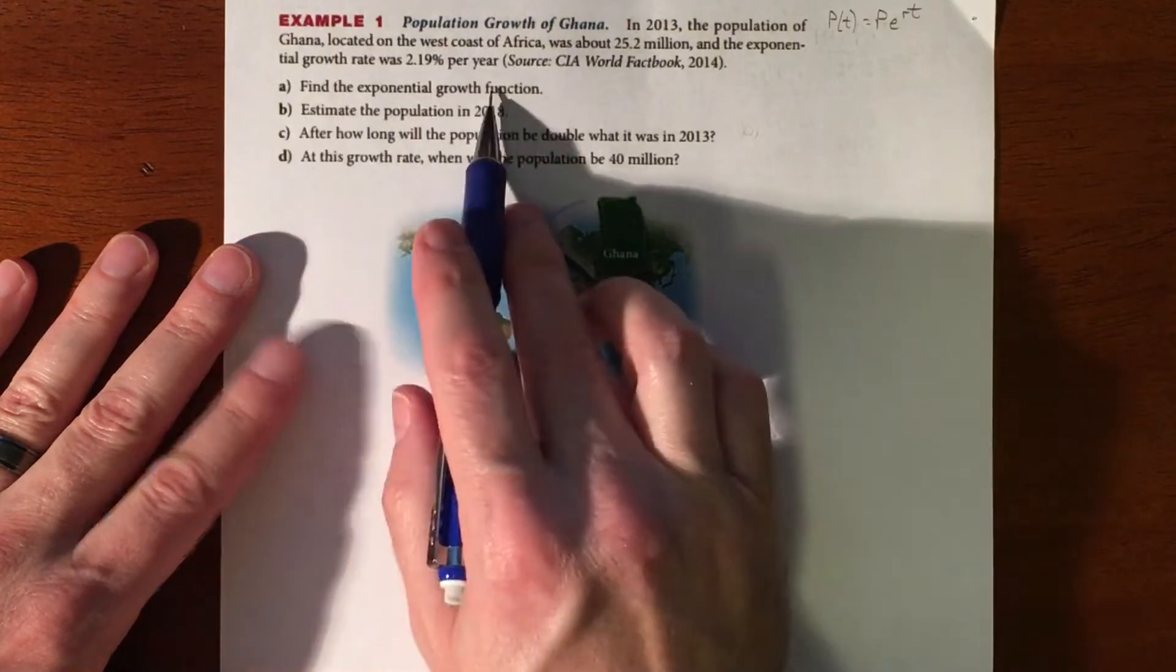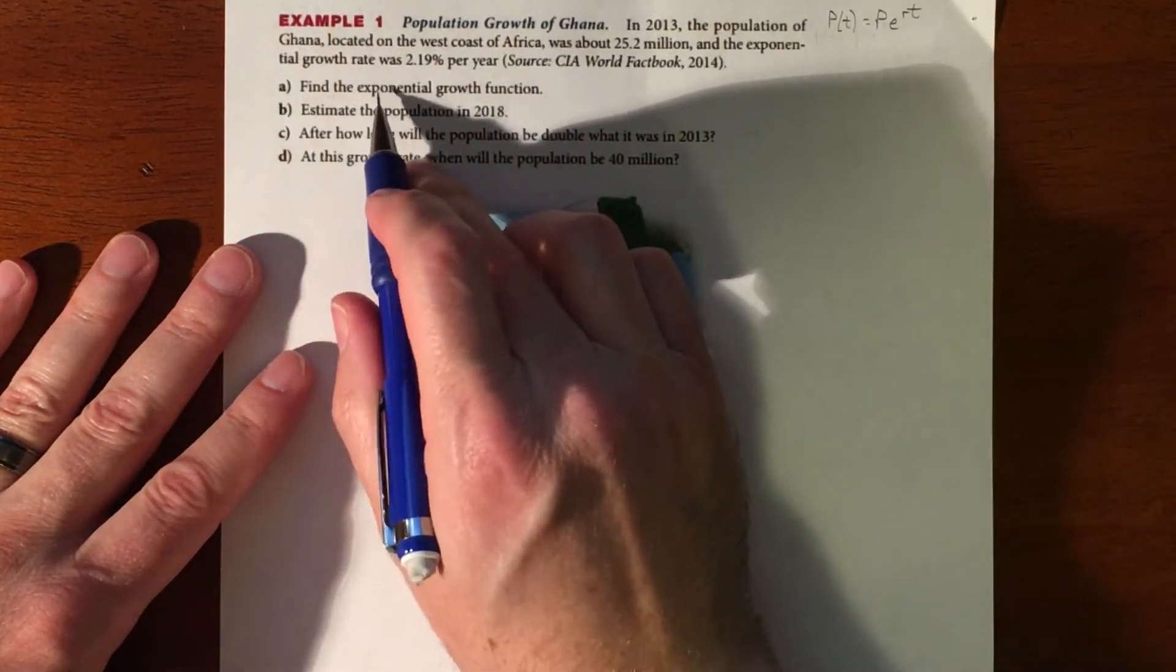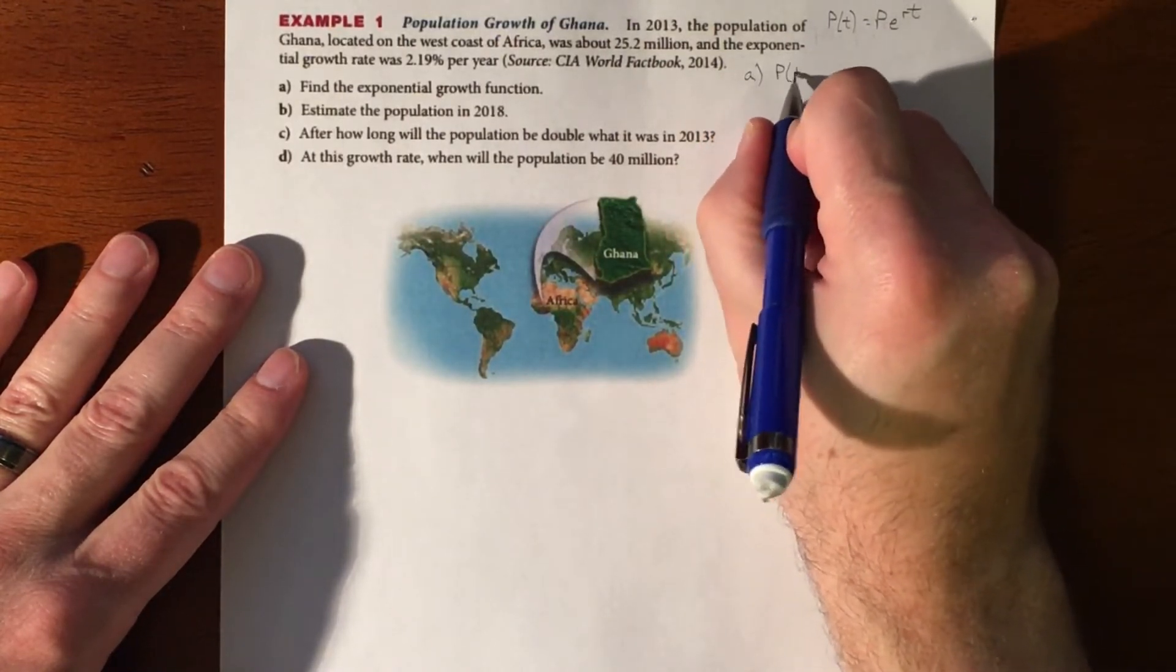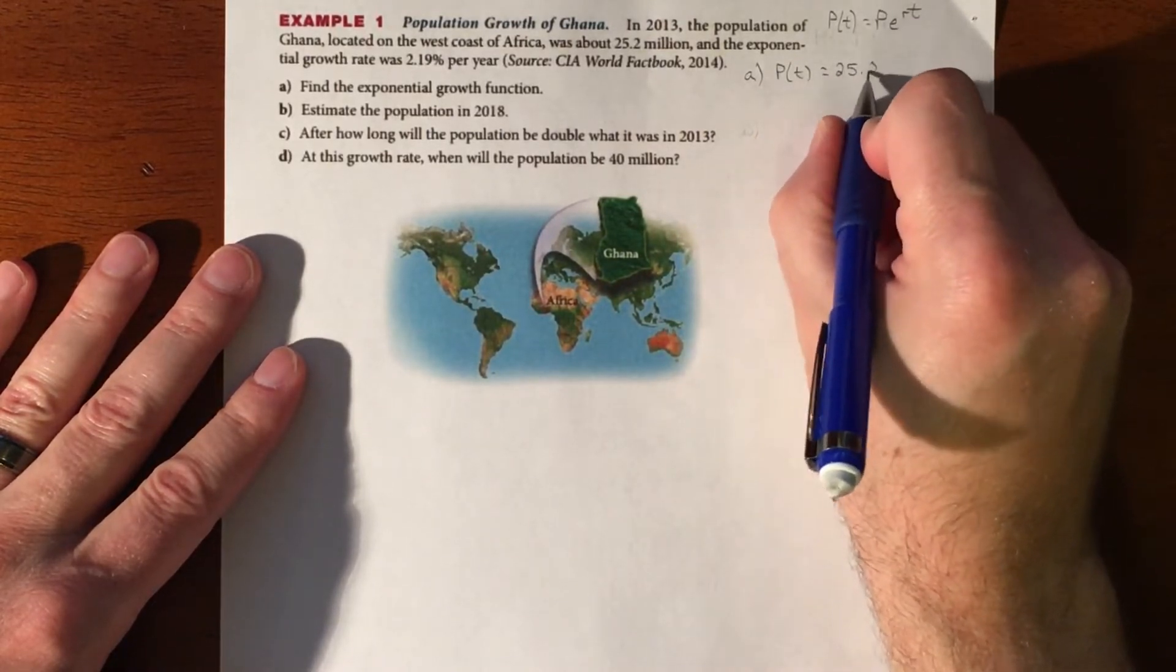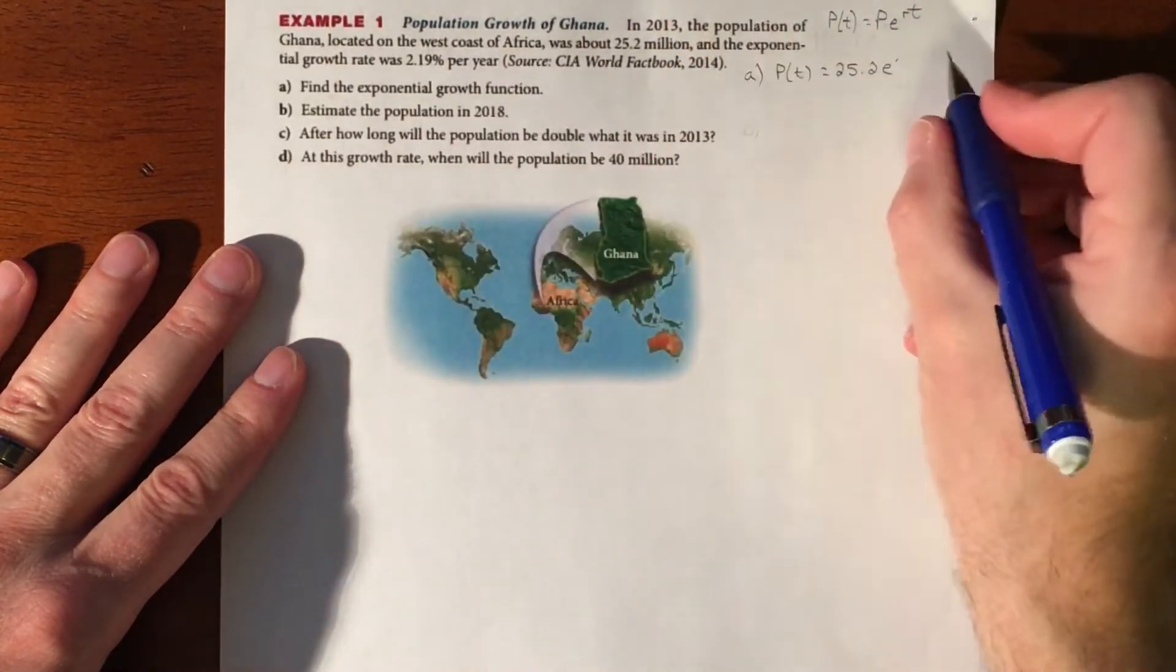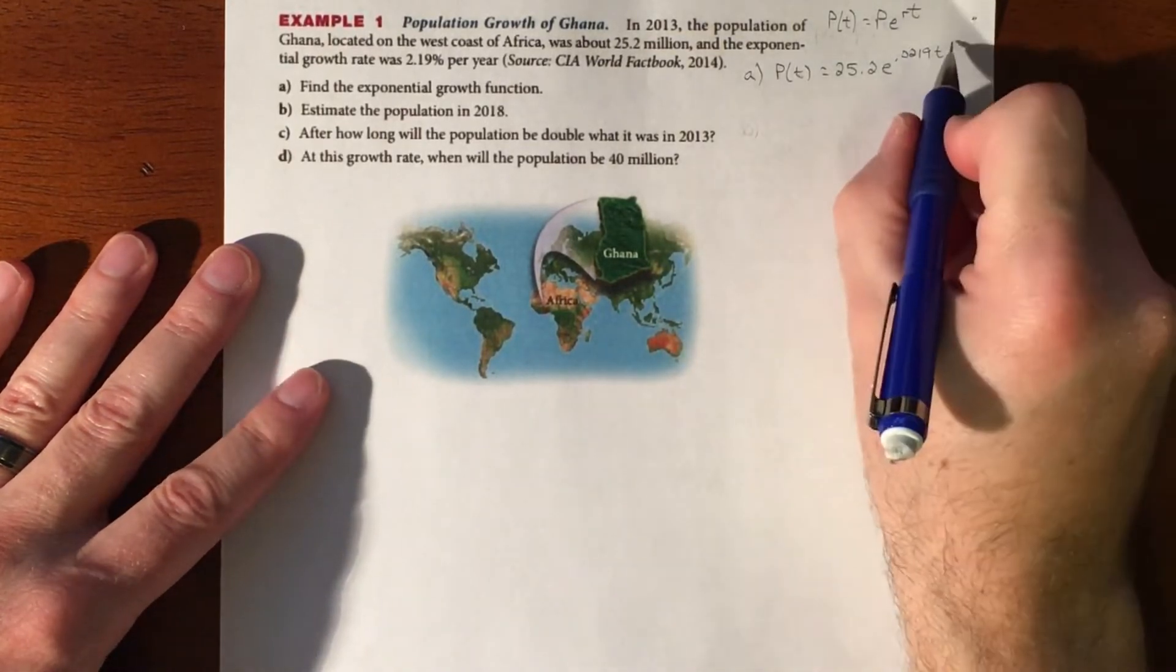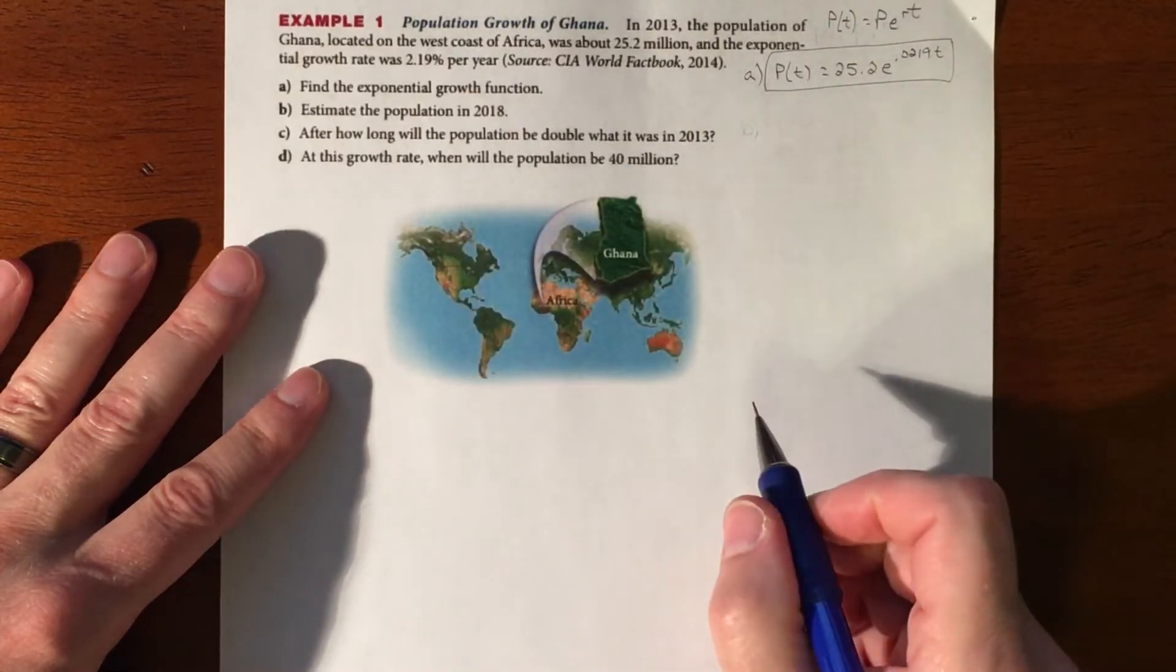So what is the exponential function for this equation? Our population with respect to time is going to be 25.2 million times E. And then we want the decimal version of that rate, so 0.0219T. Okay, so we're going to be using this equation throughout all these different types of problems.